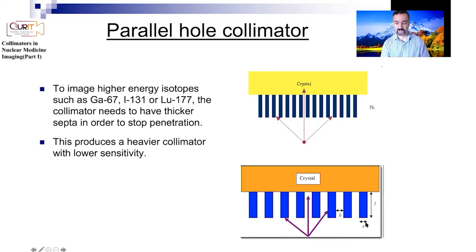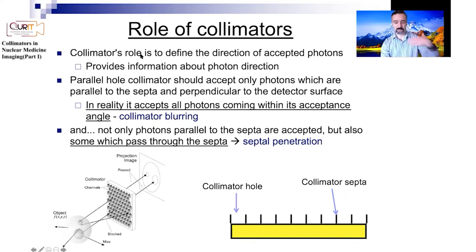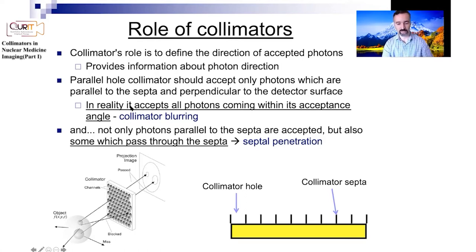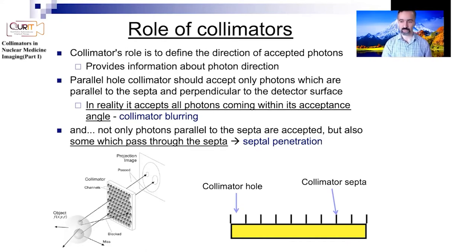For higher energy isotopes like lutetium-177, which is very popular for theranostic applications, you need collimators with thicker septa. The septa thickness s must be larger, which impacts sensitivity, but you have to make the septa thicker otherwise you'll have too much septal penetration. The collimator's role is to define the direction of accepted photons, allowing those perpendicular to the detector surface, though a narrow acceptance angle results in collimator blurring.